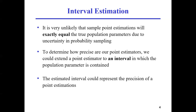Point estimations are just too violent — you make the assumption that population parameters are equal to sample parameters, but in real experiments that is not likely to happen. So to determine how precise our point estimators are, we could extend a point estimator to an interval in which the population parameter is contained. I'm not sure about the accurate population mean, but now I have a sample mean. Based on this sample mean, I want to establish an interval. For example, if the sample mean is zero, I want to use zero as the center of the interval and expand it to the left and right.